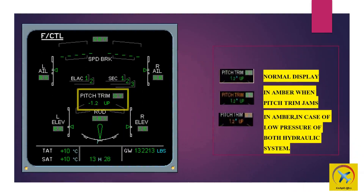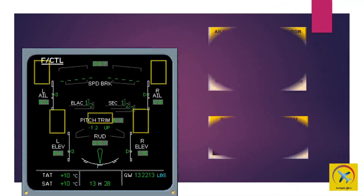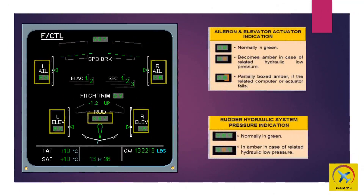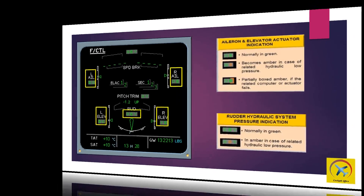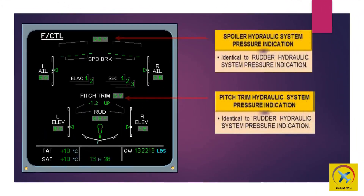Normal display of pitch trim shows white and green, turning amber when pitch trim jams or in case of low pressure of both hydraulic systems. Aileron and elevator actuator indication is normally in green; it becomes amber in case of related hydraulic low pressure, or partially boxed amber if the related computer or actuator fails. For rudder hydraulic system pressure indication, it is normally in green and turns amber in case of related hydraulic low pressure.